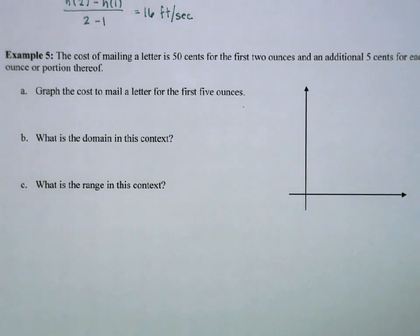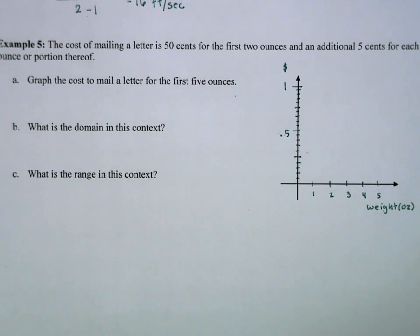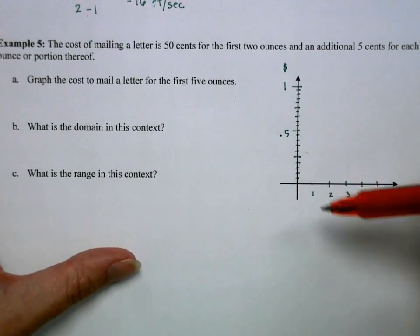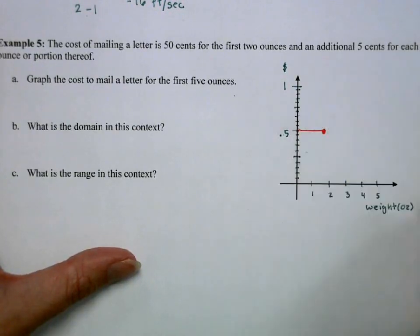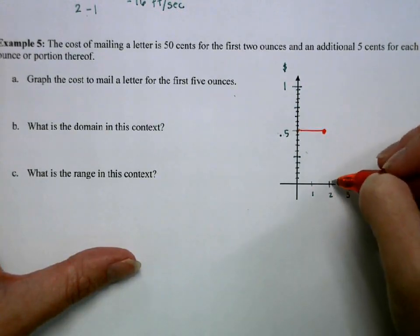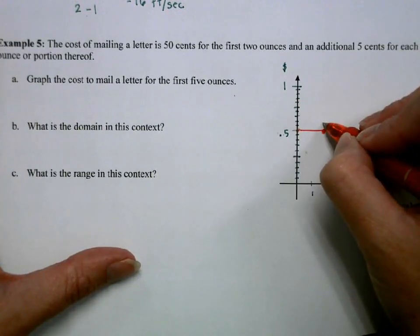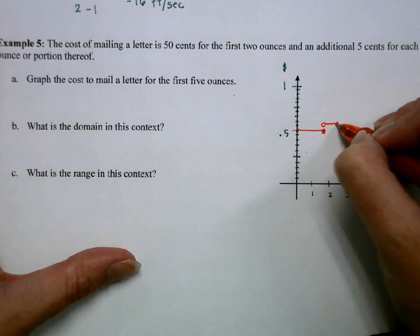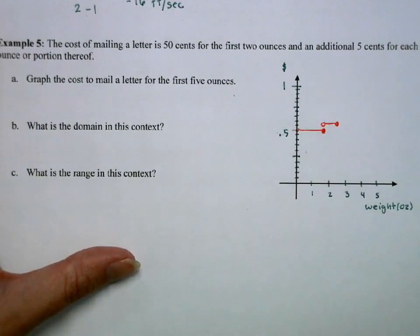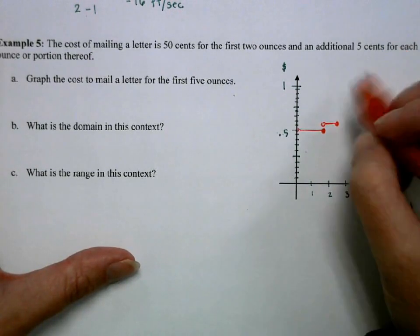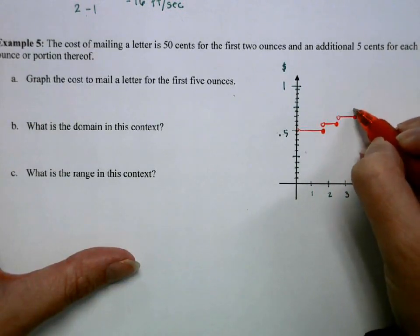The cost of mailing a letter is 50 cents for the first 2 ounces and an additional 5 cents for each ounce or portion thereof. Graphing this: for the first 2 ounces the cost is 50 cents, then when we add an additional ounce it jumps up 5 cents — not gradually, but abruptly. There's an open dot at 2 ounces because if it's exactly 2, you pay the lower price, but just above 2 it jumps. This is a step function.